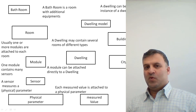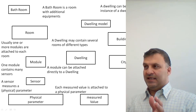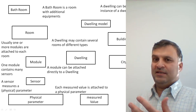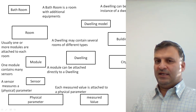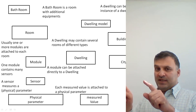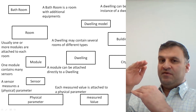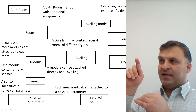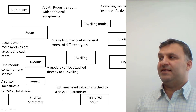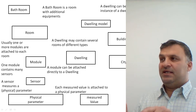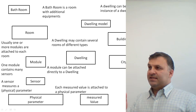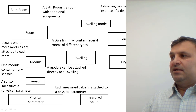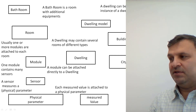This is the exercise. We specified the classes we will use in our system. We have more classes and more detailed classes. Usually with the detailed form of a class, we have three fields: the name of the class, the name of the attributes, and the name of the operations or methods. Here, we use the simple form of the class — it is merely a rectangle. We have these classes: bathroom, room, dwelling model, building, city, dwelling, module, sensor, physical parameter, and measured value.